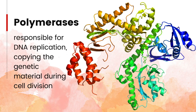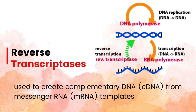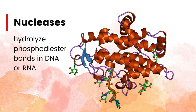DNA polymerases are enzymes responsible for DNA replication, copying the genetic material during cell division. In genetic engineering, DNA polymerases are used for processes like polymerase chain reaction (PCR), which amplifies specific DNA sequences, and DNA sequencing, allowing researchers to read the genetic code. Reverse transcriptases are used to create complementary DNA (cDNA) from messenger RNA (mRNA) templates. Nucleases are enzymes that hydrolyze phosphodiester bonds in DNA or RNA, and can be used to digest unwanted sequences during genetic engineering.